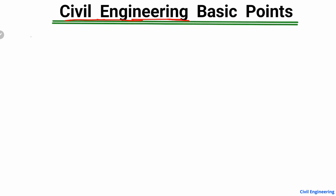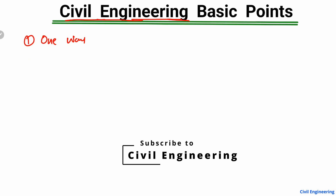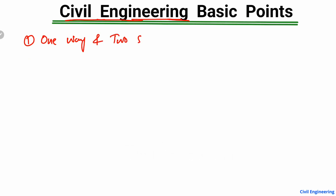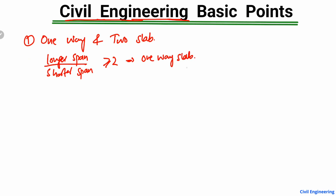First of all, we start with slab types. There are two main types of slab: one-way slab and two-way slab. When the ratio of longer span to the shorter span is greater than or equal to two, we call it a one-way slab. When the same ratio is less than two, we call it a two-way slab.